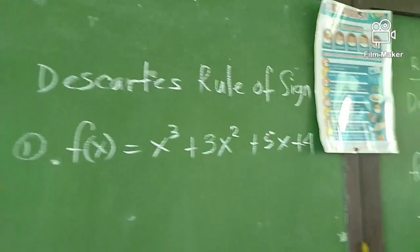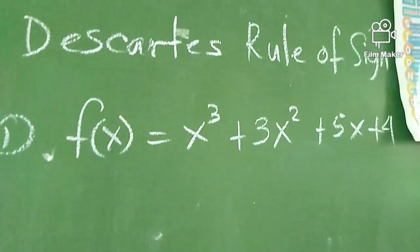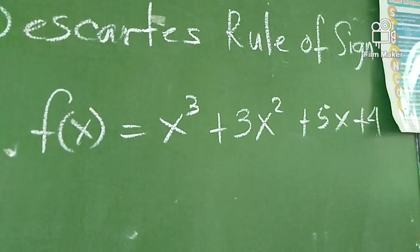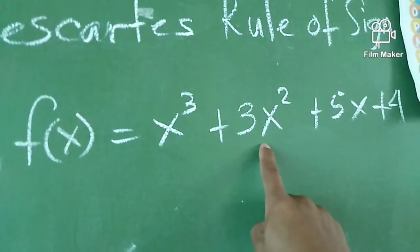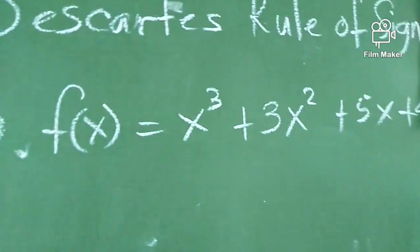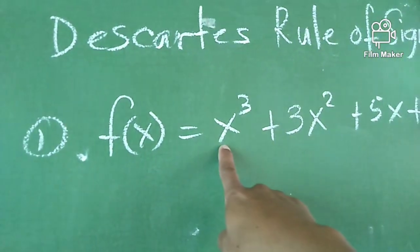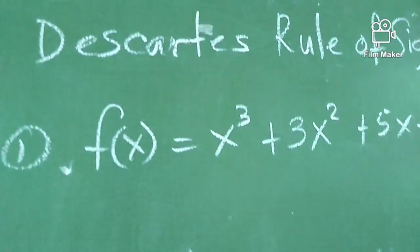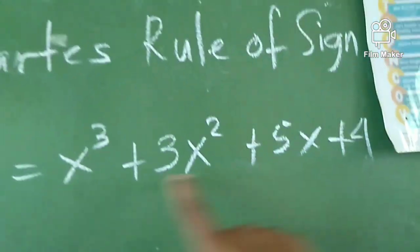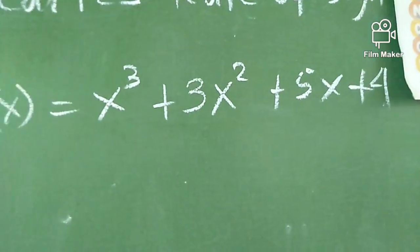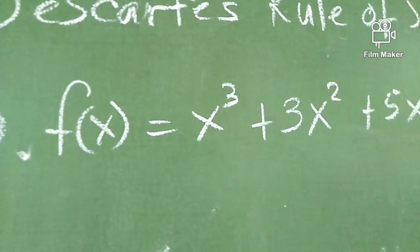We go back to the Descartes Rule of Signs. As I said earlier, when the sign changes between adjacent terms, it is a signal that we have a possible zero there. For positive x, looking at the positive real zeros — we see no change of sign. All of them are positive. So, meaning to say, we have no positive real zeros.